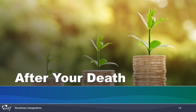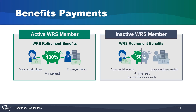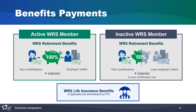Now we're going to look at some important information to share with people in charge of your affairs when you die. If you are an active member, your beneficiaries will receive a death benefit that includes the full amount of the WRS account plus the interest it has gained. Beneficiaries of inactive members or alternate payees will receive the money the member had deposited plus interest. Beneficiaries will also receive WRS life insurance benefits if your employer participates and you have signed up for them.